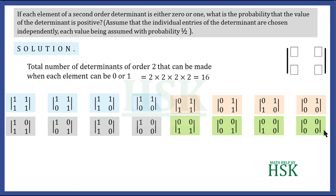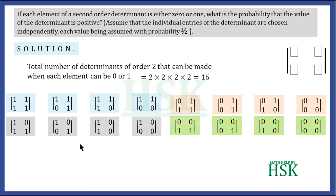Making all 16 determinants is not strictly necessary for this question, but it helps to know there are 16 possible determinants. The determinants are also listed so we can check which ones have a positive value — meaning a value equal to 1, that is, greater than 0. Several of these determinants will have value 0, and we need to identify those with positive value.